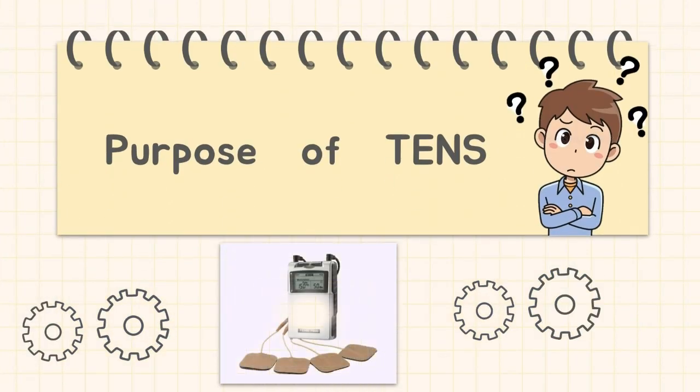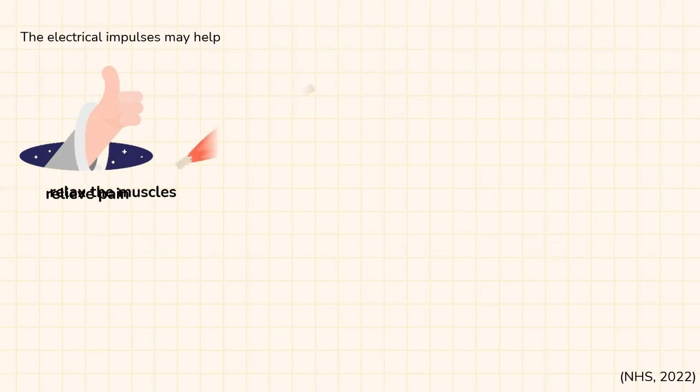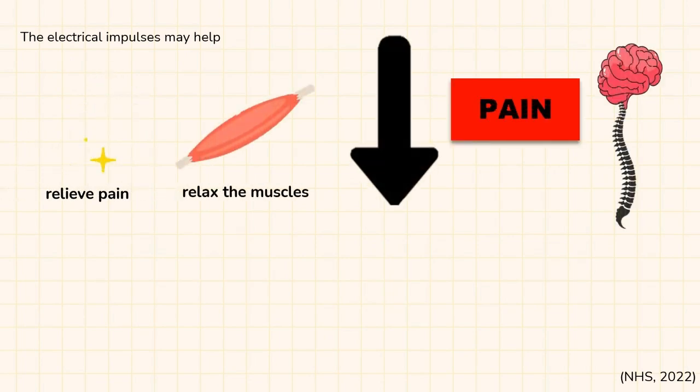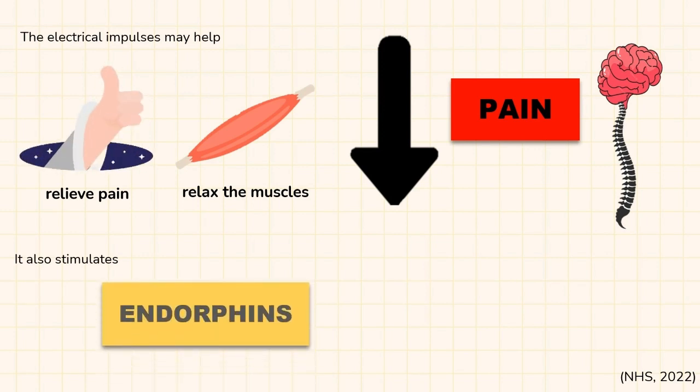What is the purpose of TENS? Electrical impulses may help to relieve pain and relax the muscles by reducing the pain signals that reach the brain and spinal cord. It also stimulates the production of endorphins, which are the body's natural pain killers.